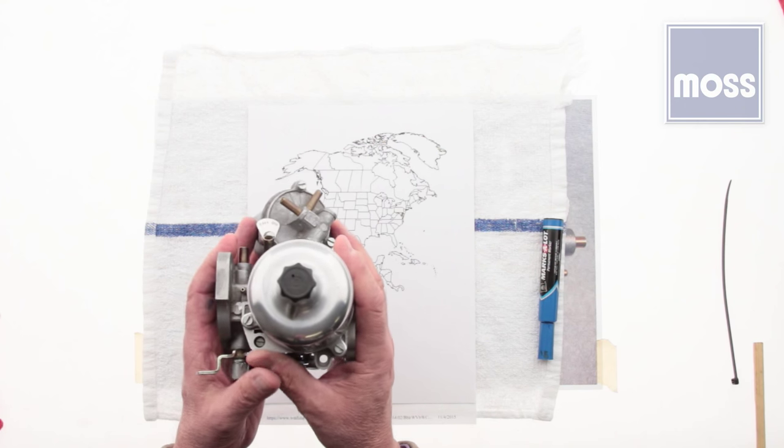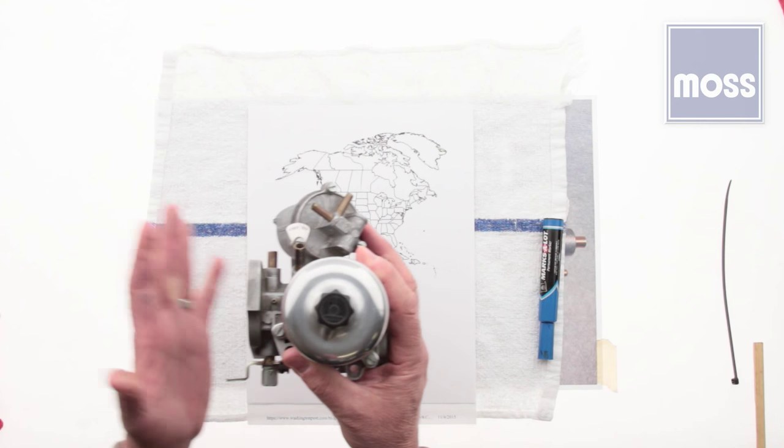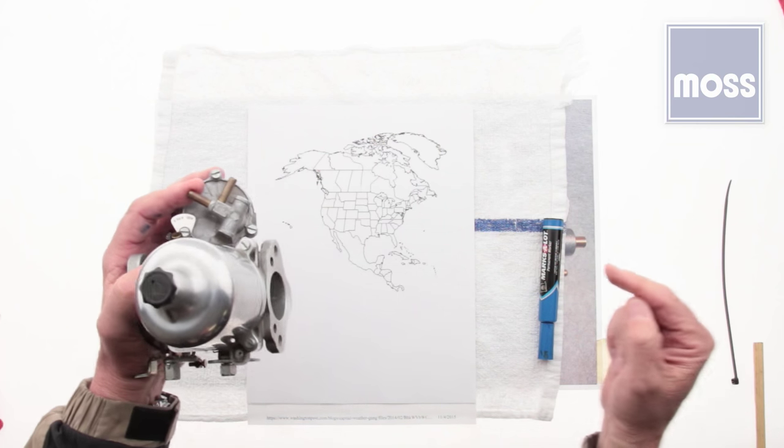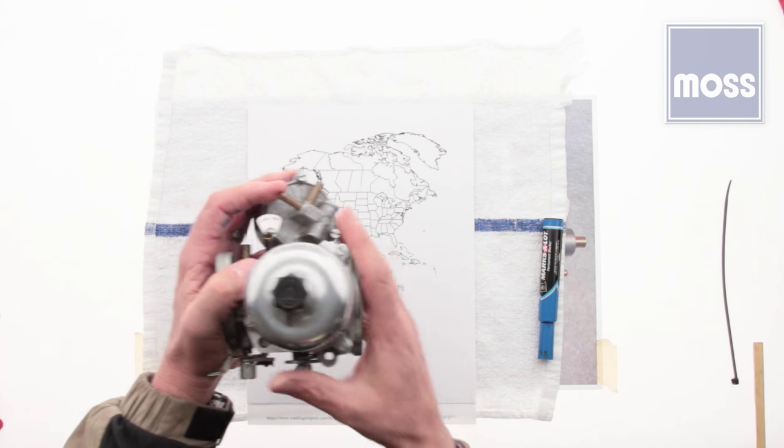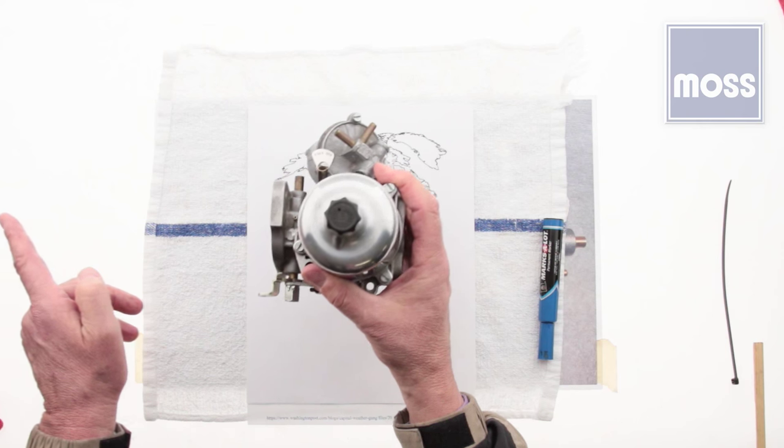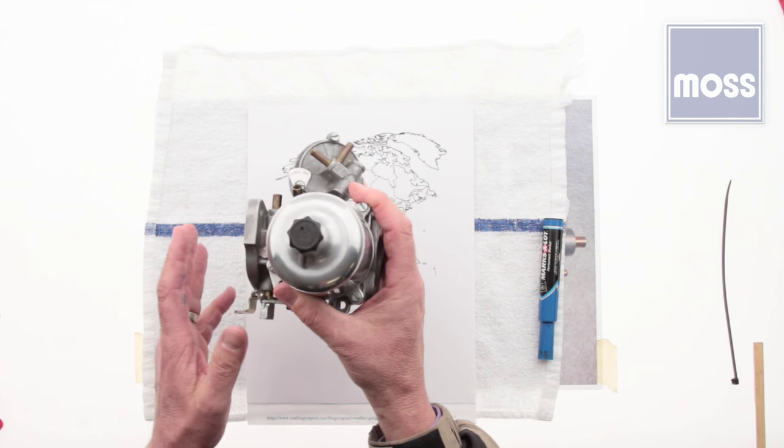First, what makes them quite different is that they are horizontal carburetors. This bolts to the side of the motor like you see it here. The air enters in from the side, passes through, and comes out the other side into the engine. So that's a big difference between this and most carburetors.